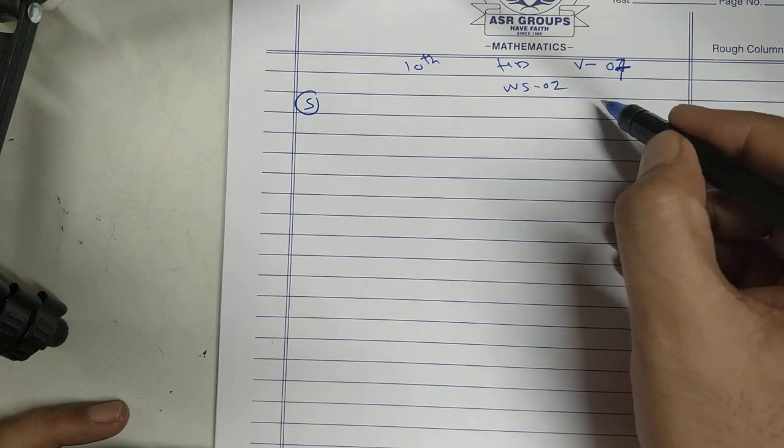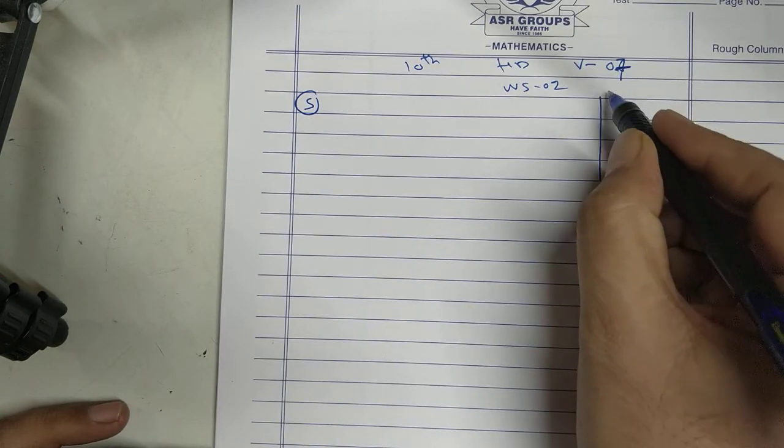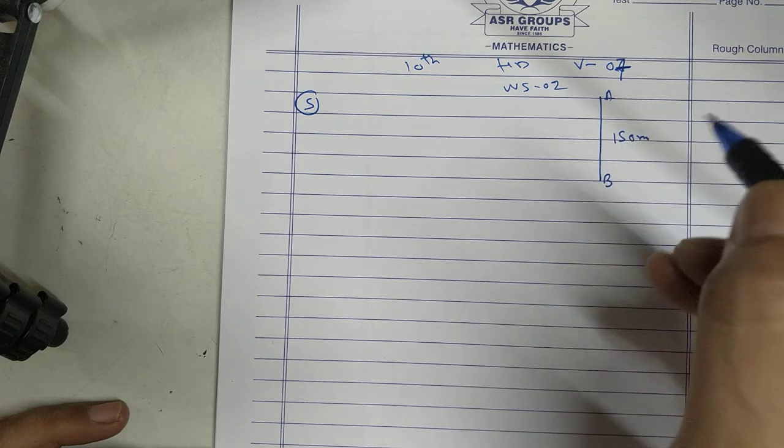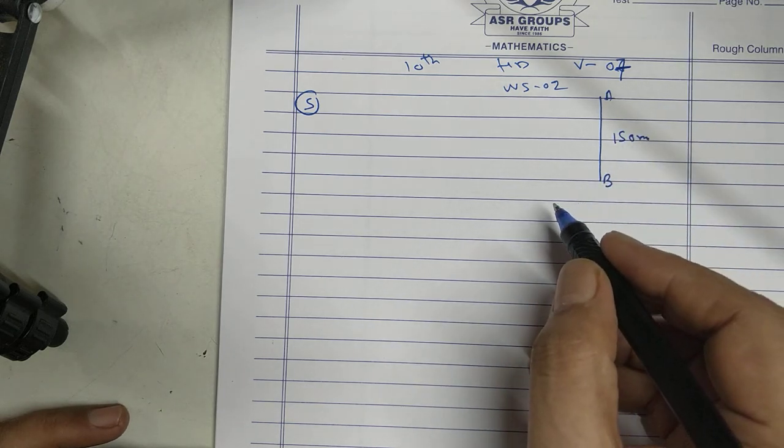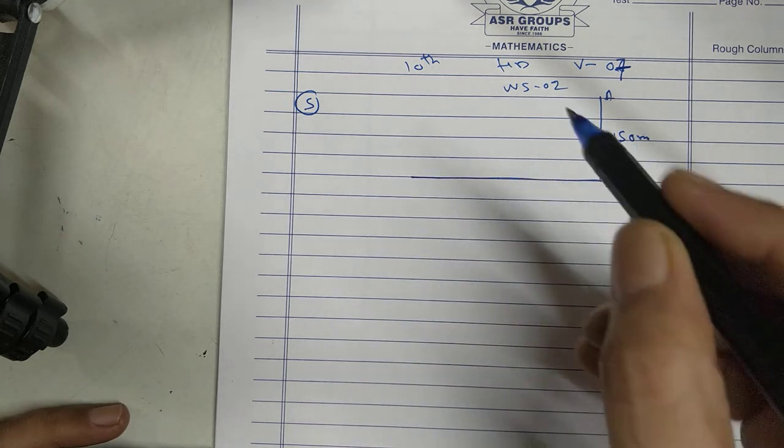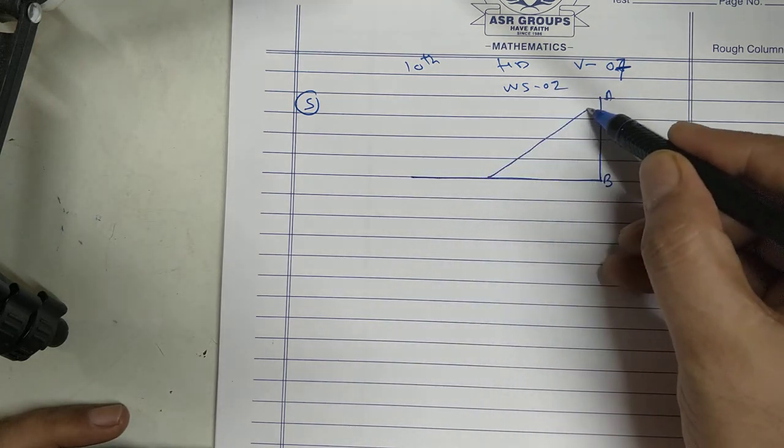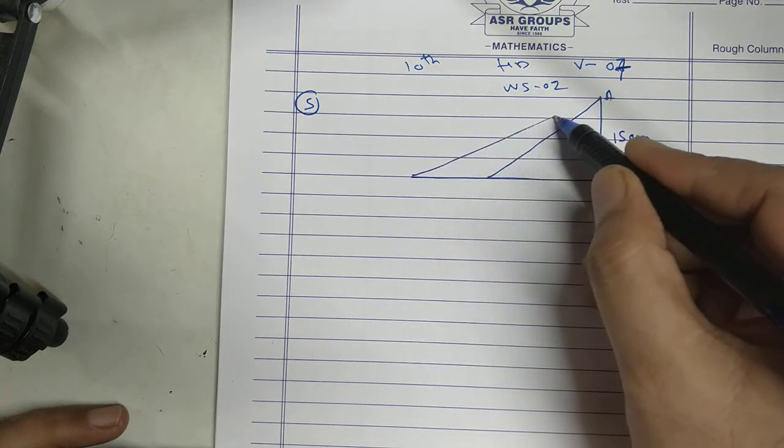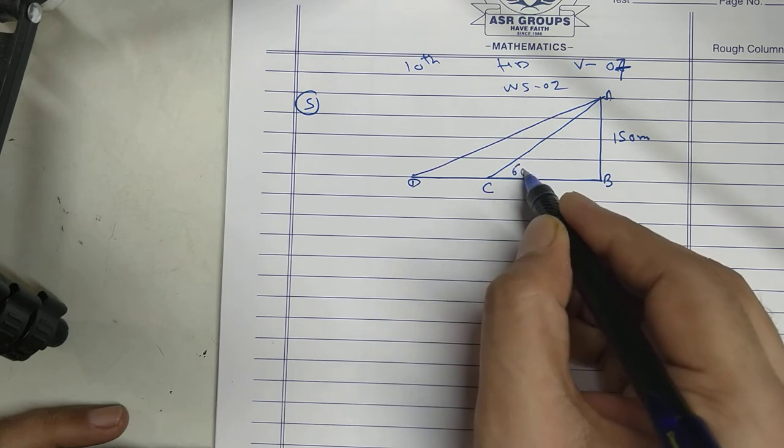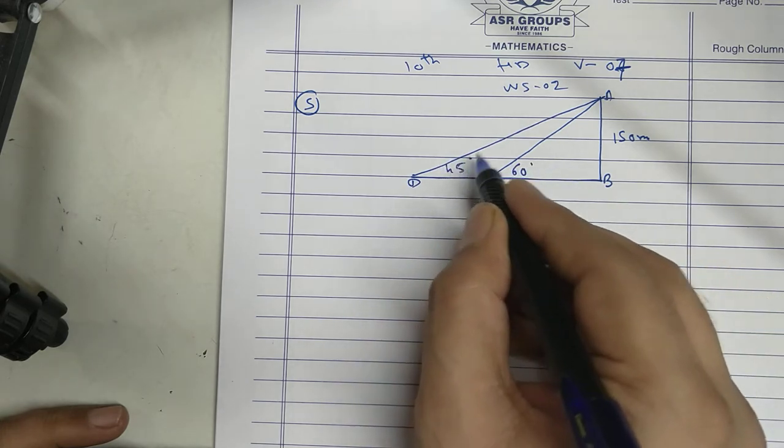Same way, this is a tower, lighthouse, 150 meter. This is 60 degree, this is 45 degree.